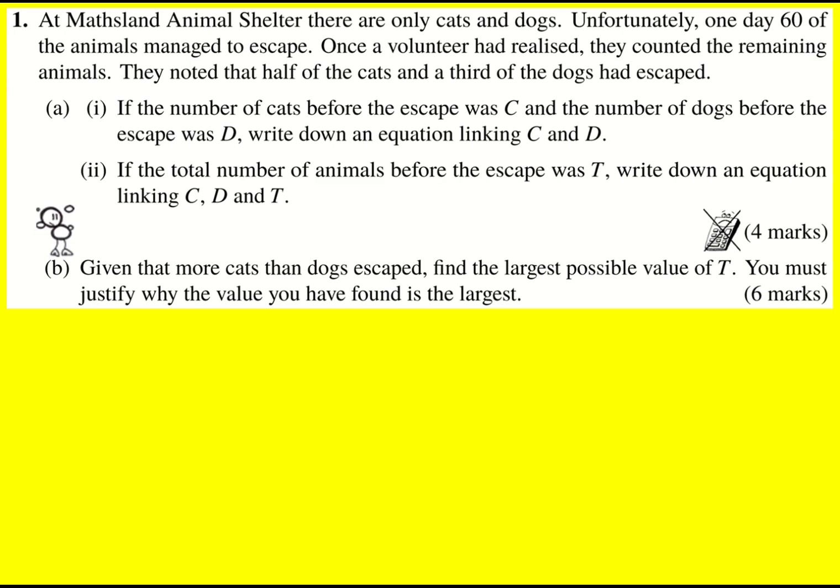Part A of this question is fairly friendly actually. It's just setting up the equations that we're then going to use. We're told that the number of cats before the escape was C, the number of dogs before the escape was D, and we need to write an equation linking C and D.